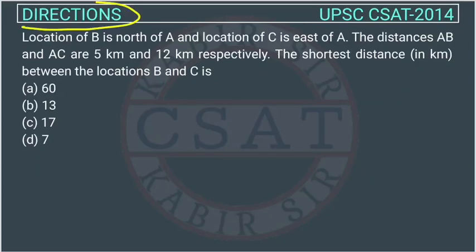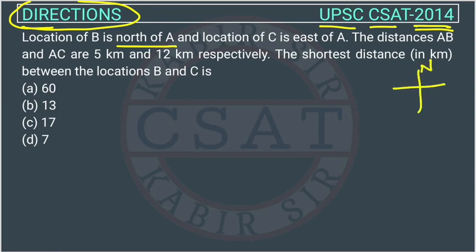This is a question of reasoning from the direction chapter, asked by UPSC in the CSAT paper of 2014. The location of B is north of A. Whenever you see a direction question, you should draw this diagram — north, south, east, or west.